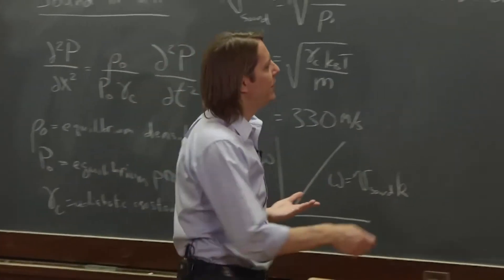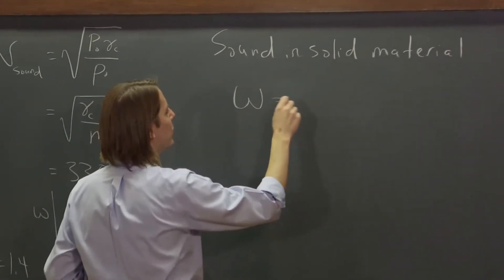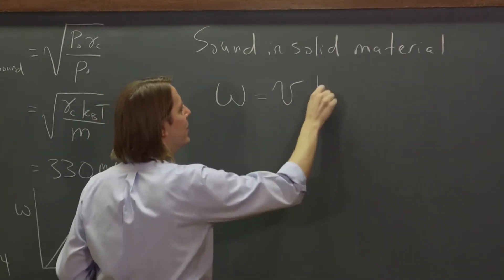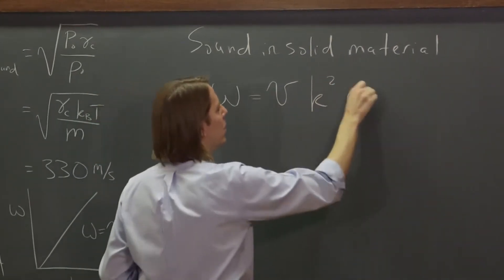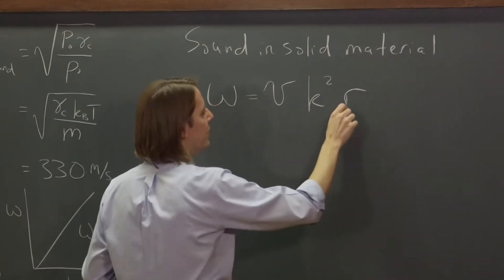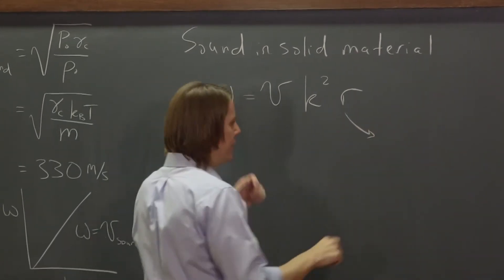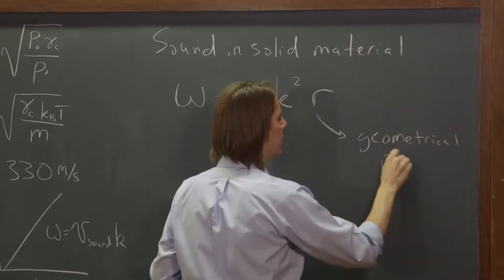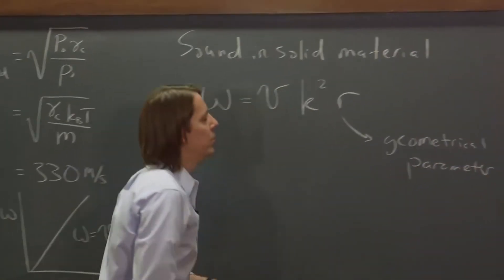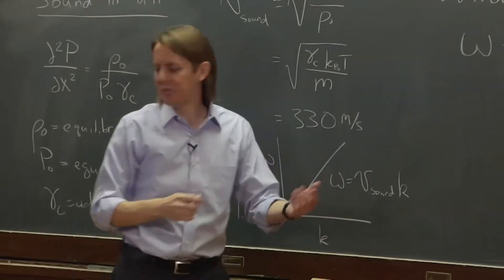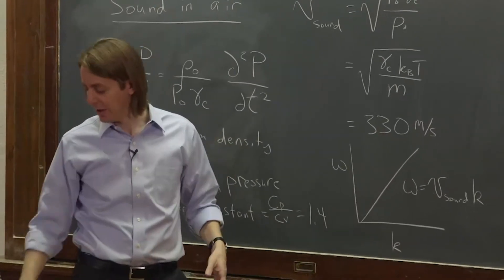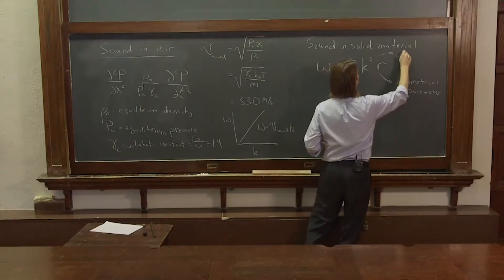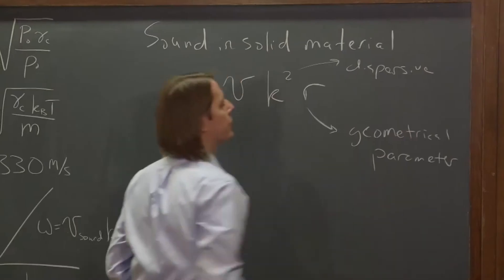It might be a longitudinal wave or transverse. Things can deform in a lot of ways. And often they come out with a dispersive wave equation, kind of like this one. So ω is v, and that's still the speed of the sound. But then it might be k² r, where this is just some geometrical parameter to make the units work out.